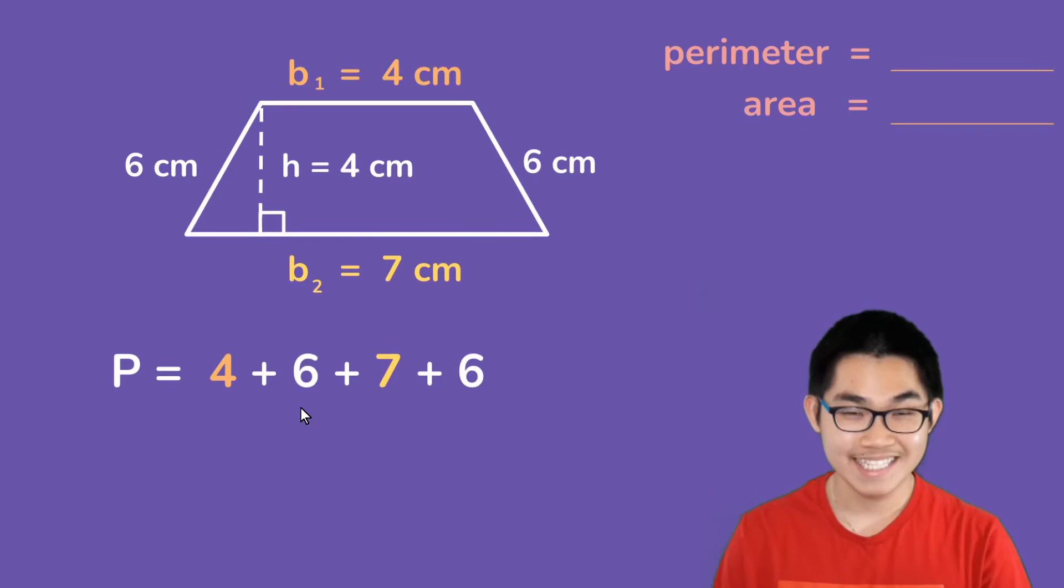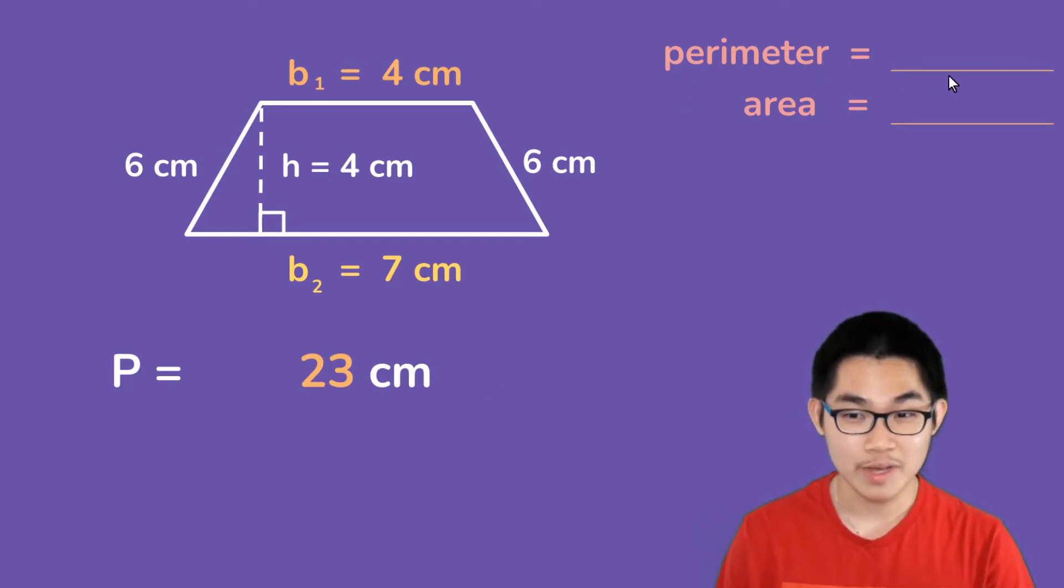So, 4 plus 6 gives you 10, 10 plus 7 gives you 17, and 17 plus 6 is 23 centimeters. So, the perimeter of this trapezoid is 23 centimeters.